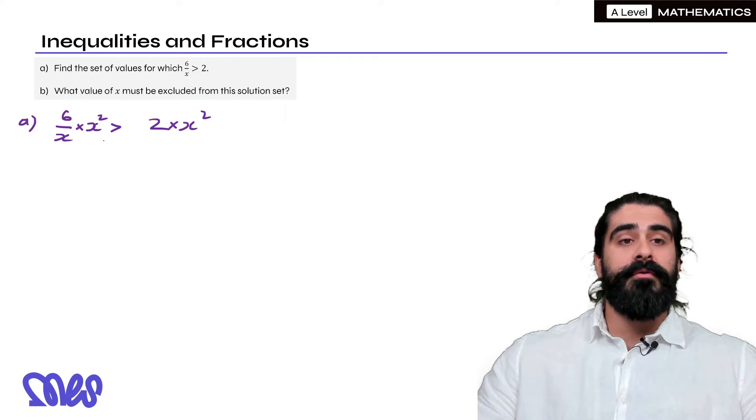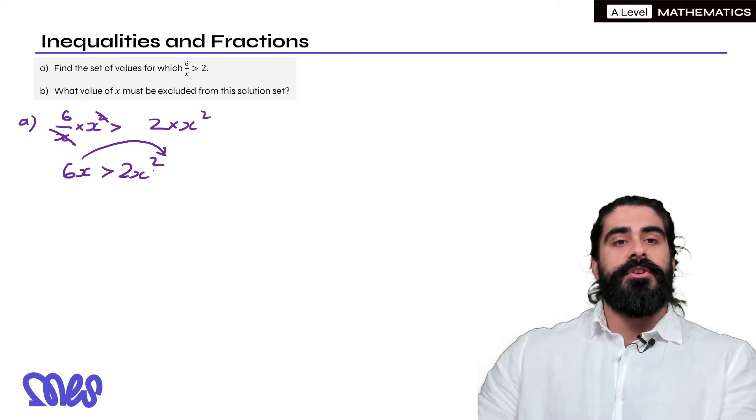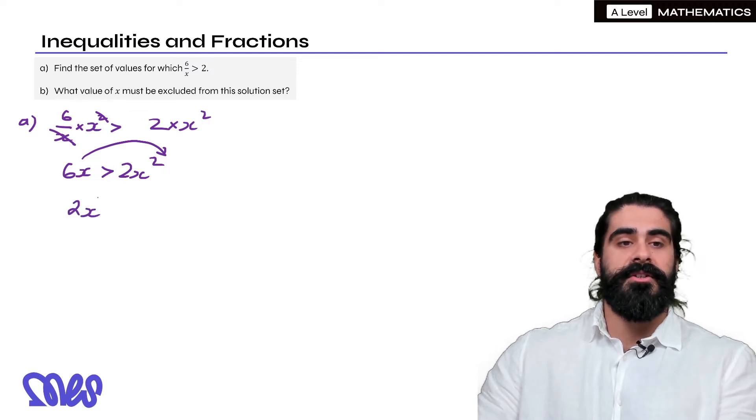We just multiply by the same denominator, we square it to ensure positivity. So we times both sides by x squared and the x's here would cancel. So we're left with 6x is greater than 2x squared. Then we move the 6x over so we've got 2x squared minus 6x would be less than 0. You can see the 2x squared is in the less than side. So I'm going to write 2x squared minus 6x is less than 0.